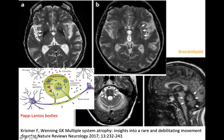In multi-system atrophy, there's abnormal alpha-synuclein, like in Parkinson's disease. But in Parkinson's disease, it was only found in the neurons. In multi-system atrophy, it's in both the neurons and the oligodendrocytes. The clusters of misfolded alpha-synuclein in the oligodendrocytes are called glial cytoplasmic inclusion bodies.